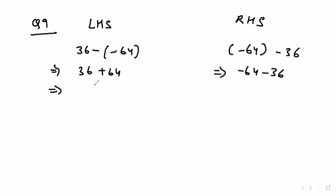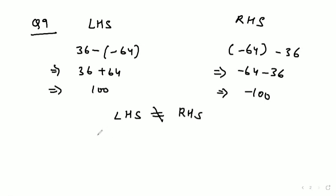In the next step, LHS becomes 100 and RHS becomes -100. So we can say that LHS is not equal to RHS. Hope the question is clear — we can prove this only by doing the calculations.